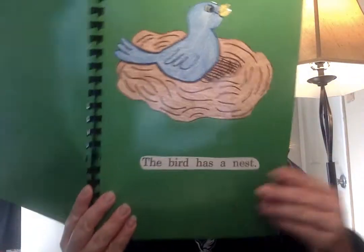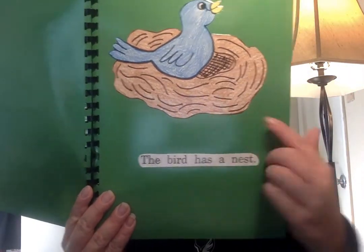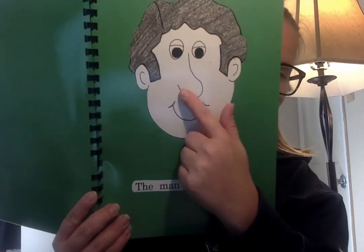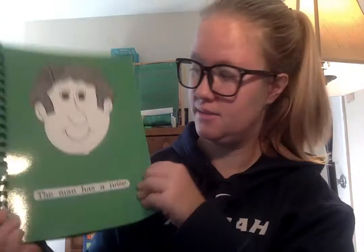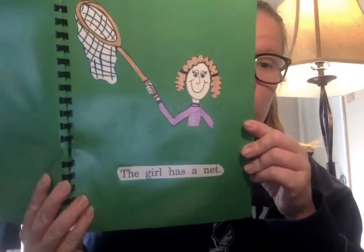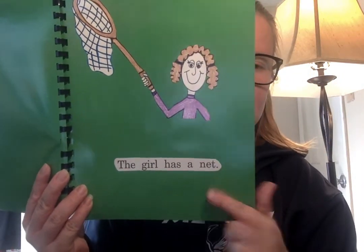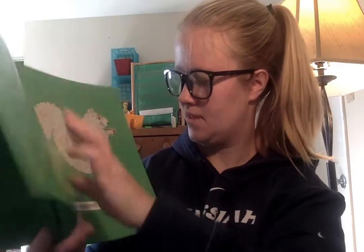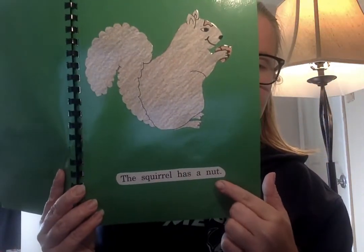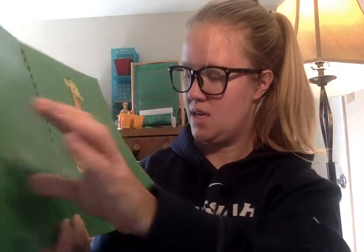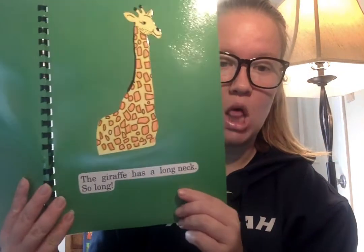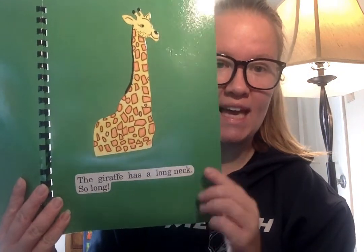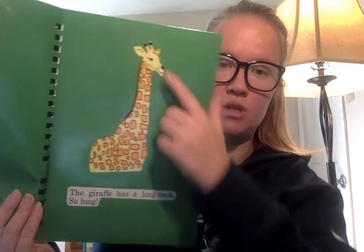This bird has a nest. The man has a nose — just like we do, we have noses. The girl has a net. The squirrel has a nut. The giraffe has a long neck — so long.